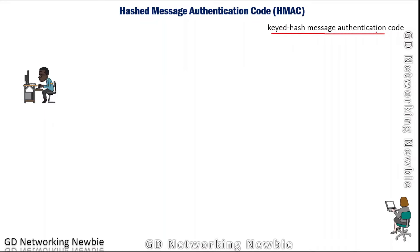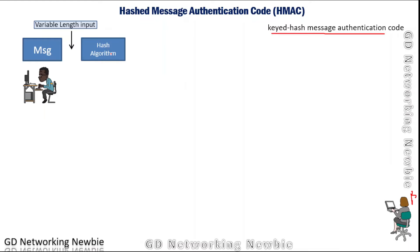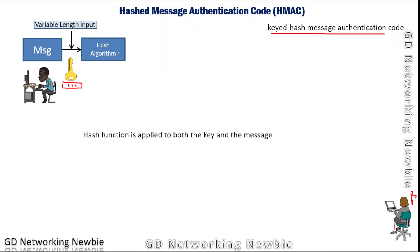In some books this is called the keyed hash message authentication code. Let's say this user wants to send a message to user B. The user generates a message of variable length, which is used as input to our hash function. Now, in this hash function, in addition to the message, we also use one key. That key can be any binary number. Both the message and the key are used as input to generate a hash value.